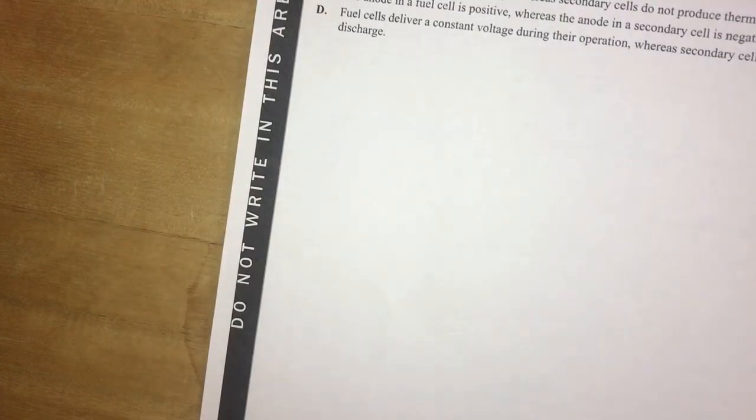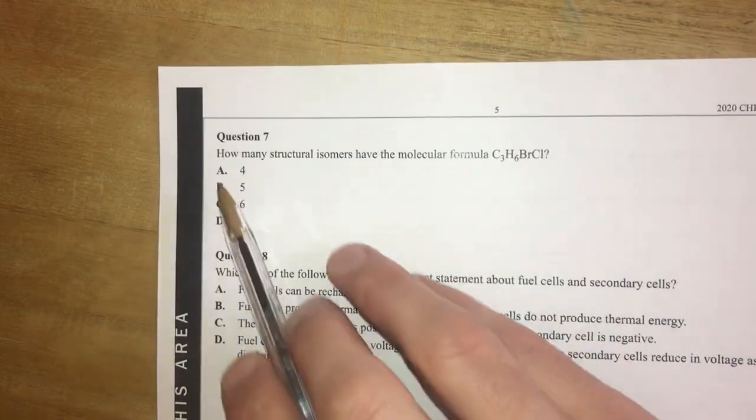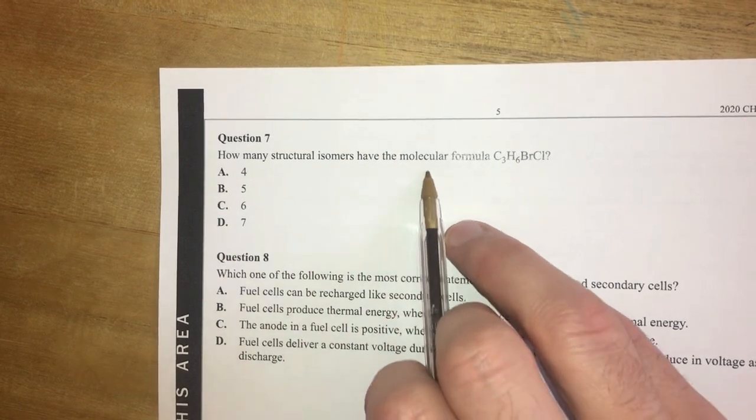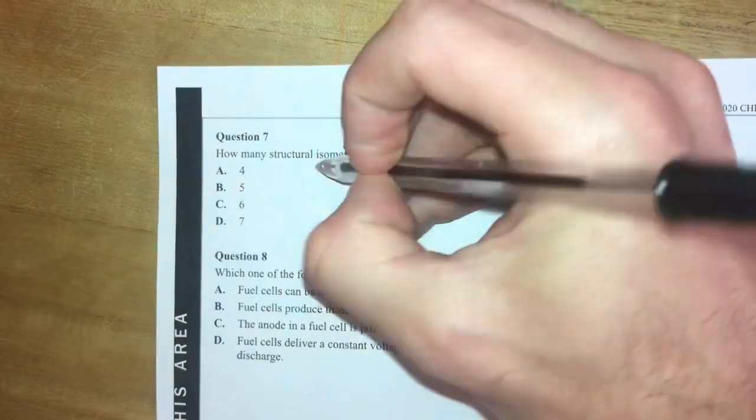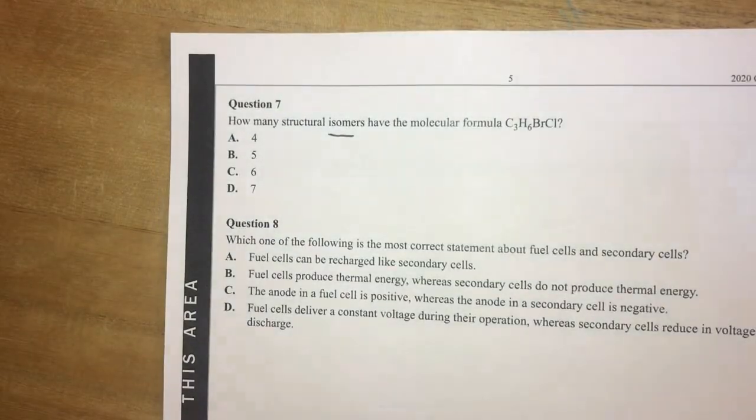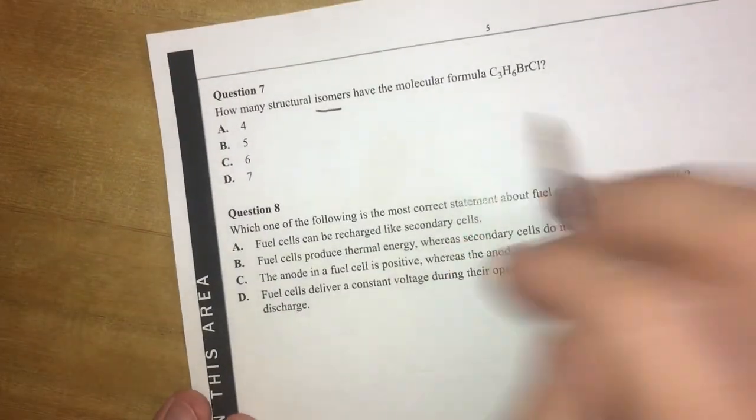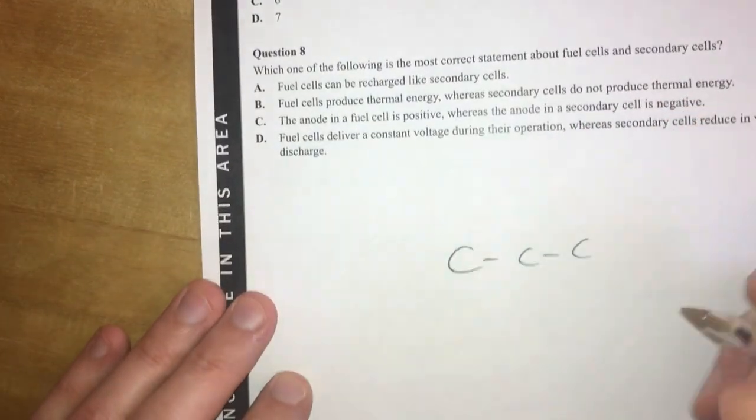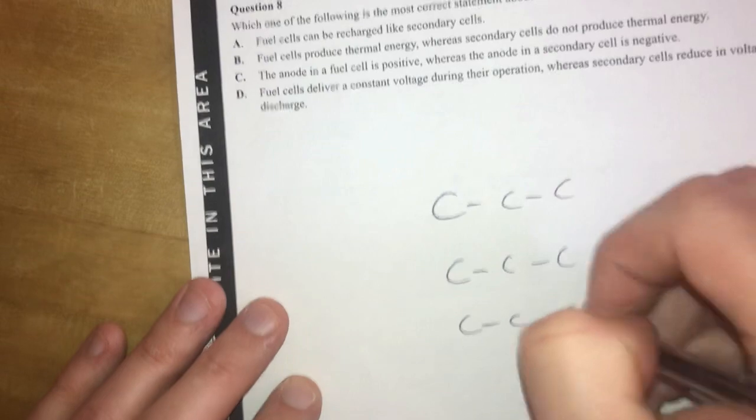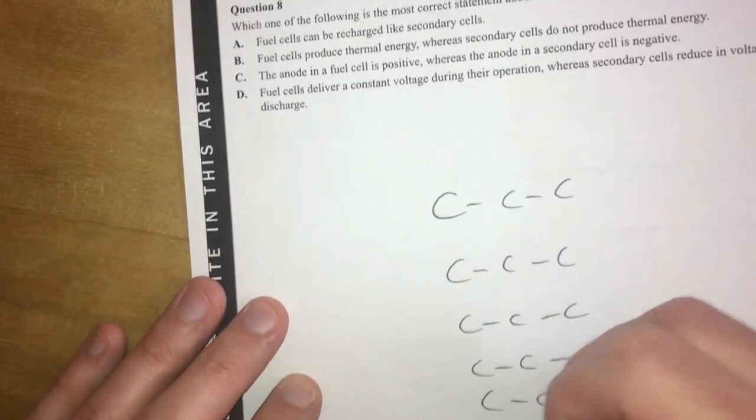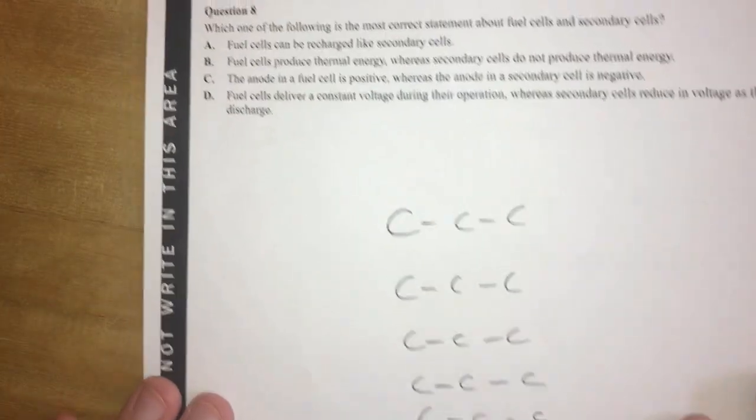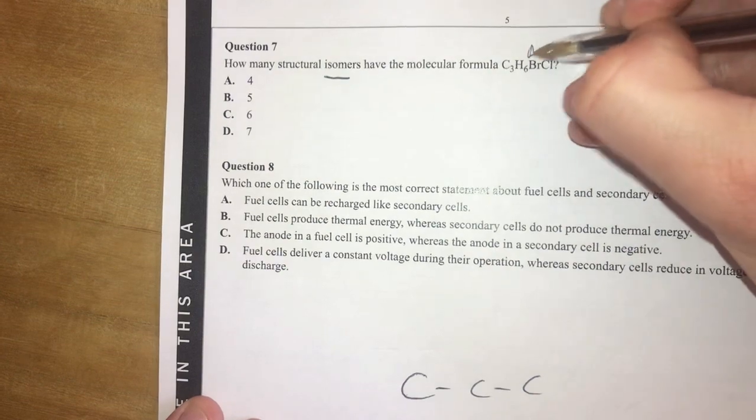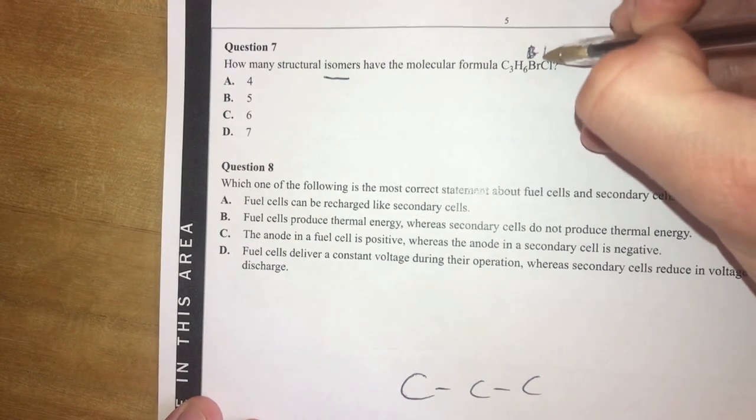Let's move into question seven. Question seven. How many structural isomers have the molecular formula C3H6Br? Isomers? Fun times. Now, what's great about this is they've given you half a page with nothing on it to actually play around with these. So I've got three carbons. Three carbons. One, two, three. I'm going to draw out a whole bunch of these. And then I'll just basically put my BRs and CLs somewhere along the line. So let's start off with just doing this. Now, I've got, let's call Br B and Cl A.